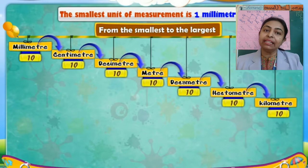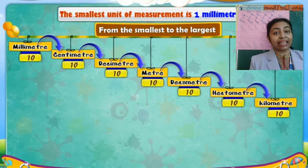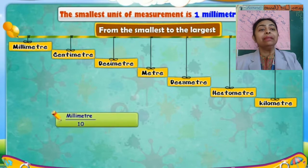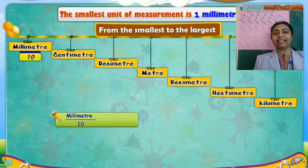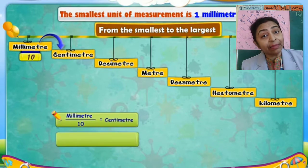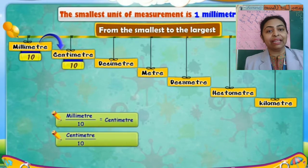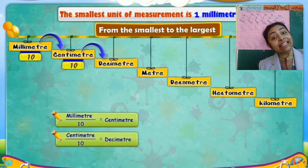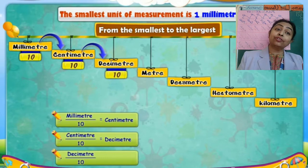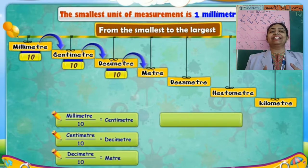So from millimeter to centimeter, if you want to convert, you have to divide by 10. Millimeter divided by 10 is centimeter. Now centimeter divided by 10, you will get decimeter. Now if you have to convert decimeter to meter, then decimeter divided by 10 is meter.